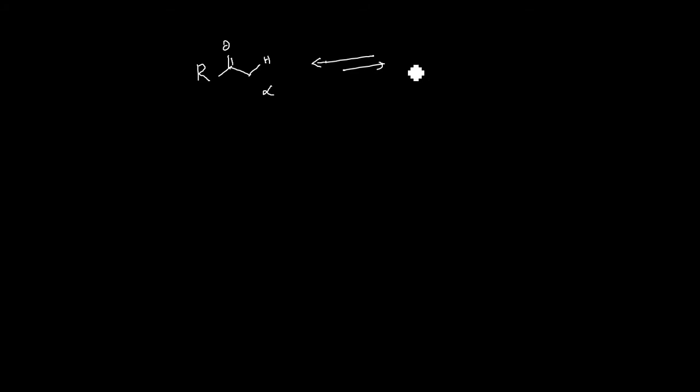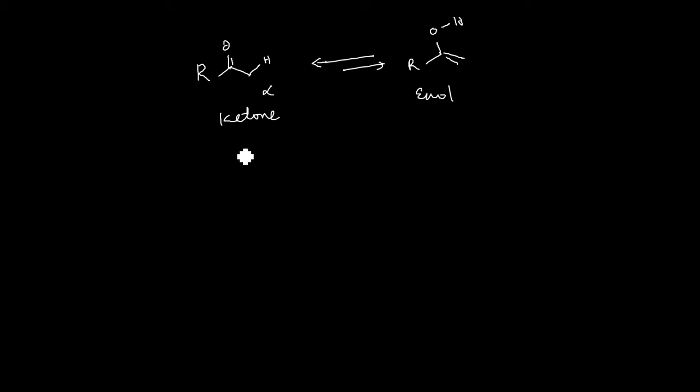Let us consider a carbonyl compound. For example, I am taking a ketone. This ketone has an alpha proton which is acidic, so it can undergo tautomerization and gives you an enol, which is another tautomer. This tautomerism is keto-enol tautomerism. So there are two different tautomers: tautomer 1 is ketone and tautomer 2 is enol.